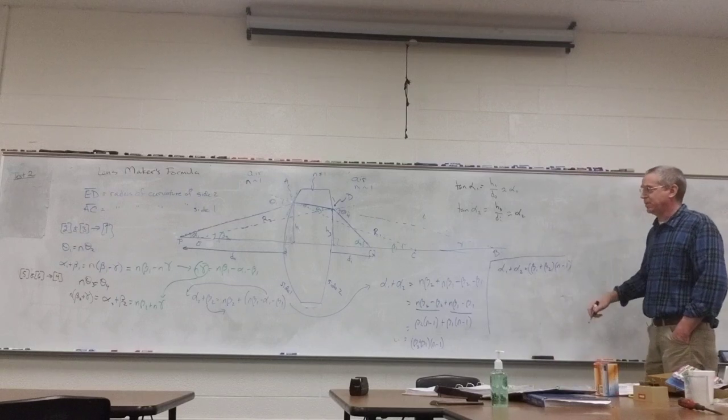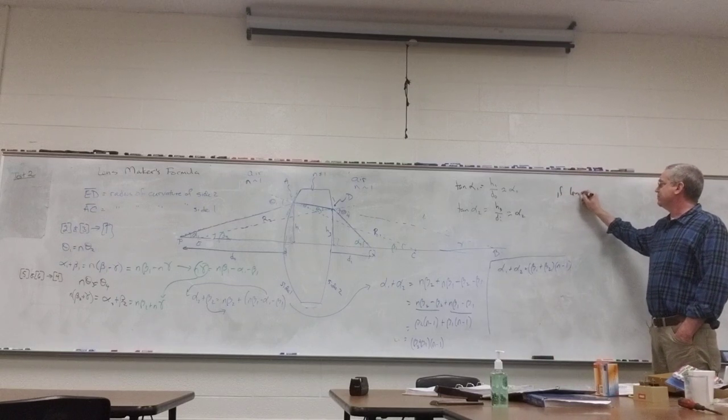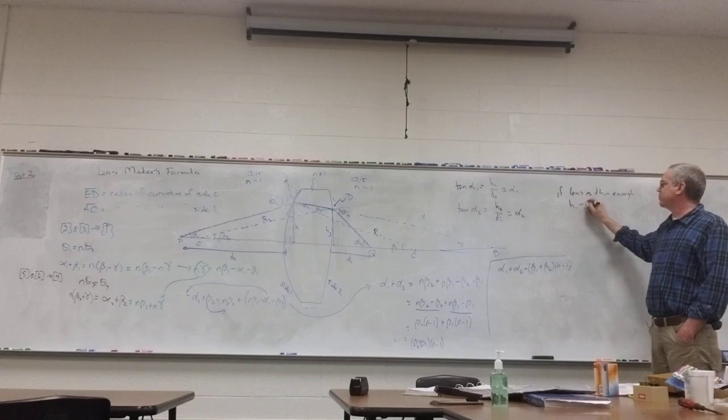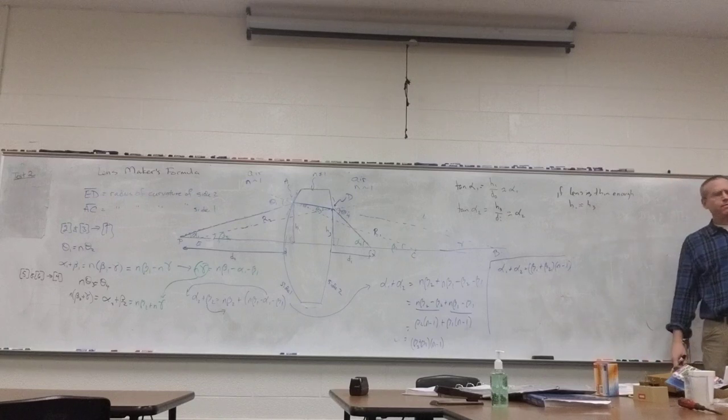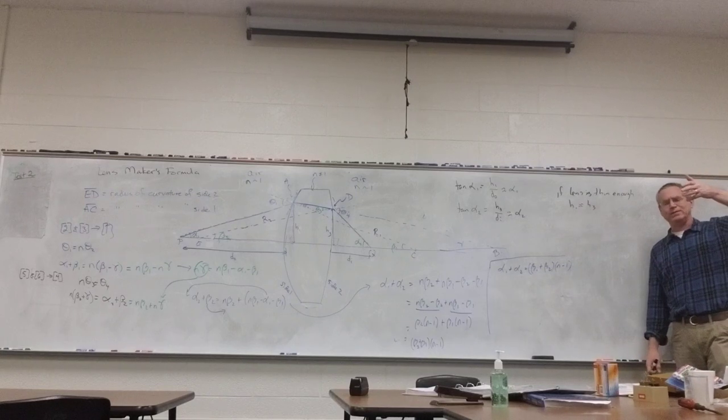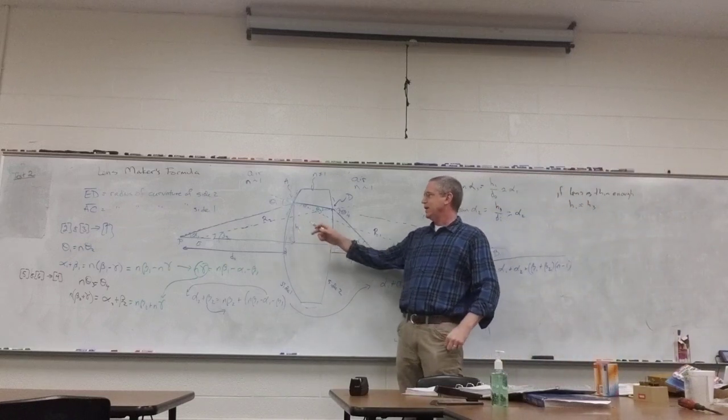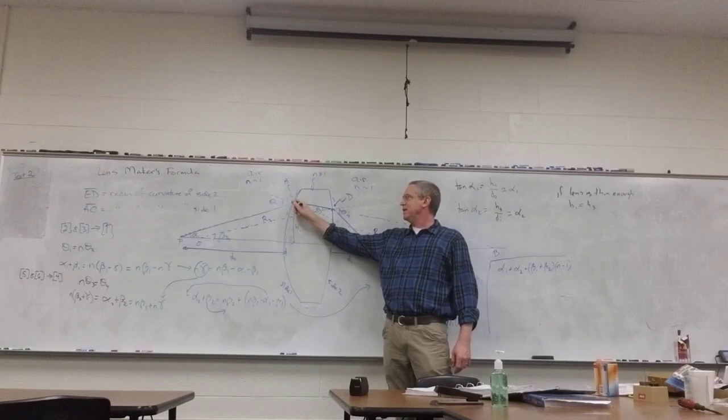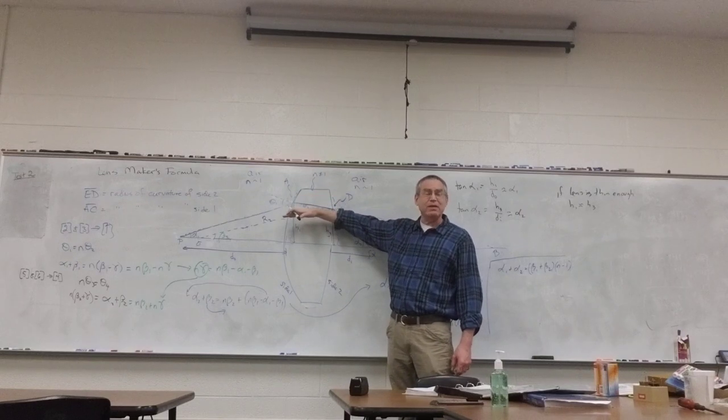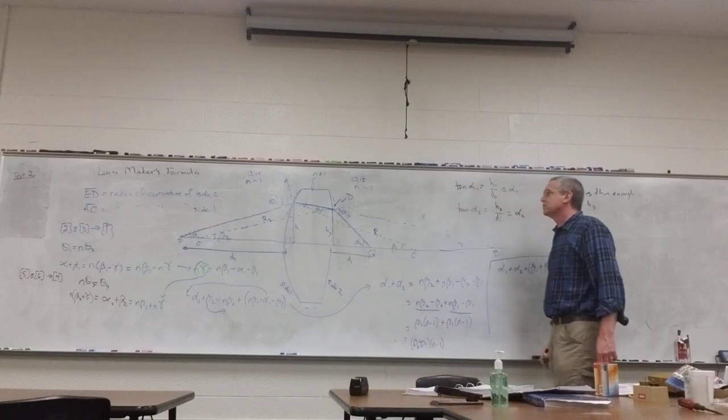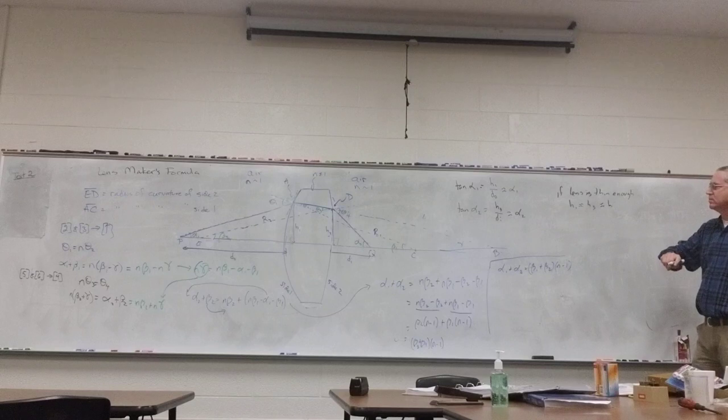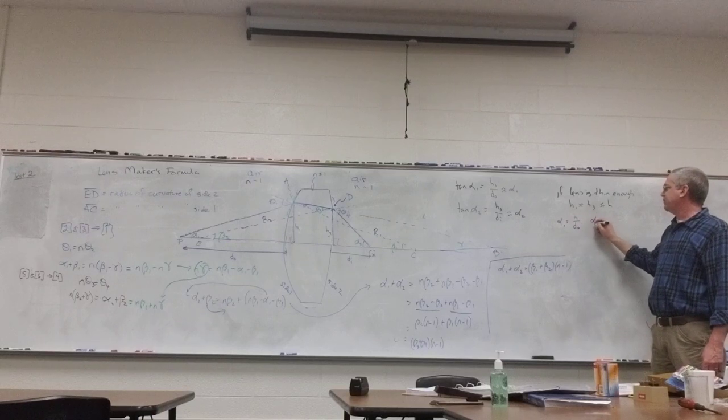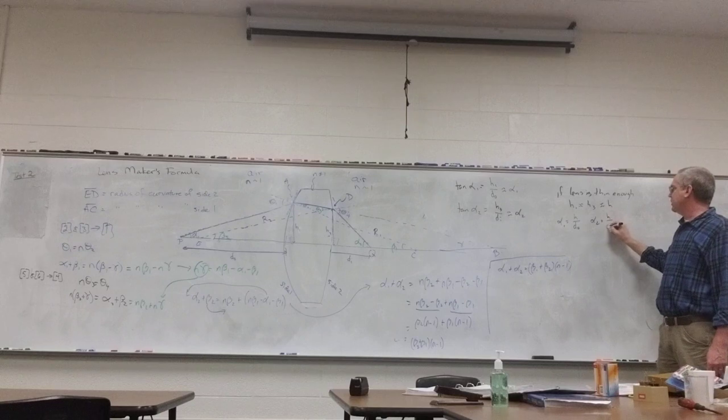If the lens is thin enough, then H1 is approximately H3. Because it doesn't have far to go. It's not like it hits the glass and does a really sharp turn here. I've drawn it more exaggerated than it probably actually is. But if the lens is thin, then these two different heights really are going to be the same. So I'm just going to set those equal to H. Therefore alpha 1 equals H over the object distance. Alpha 2 equals H over the image distance.